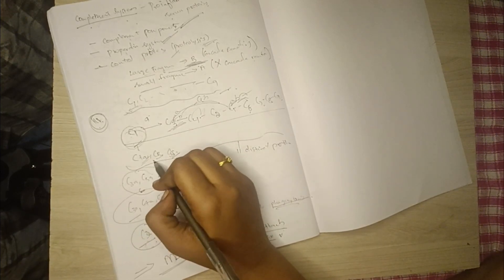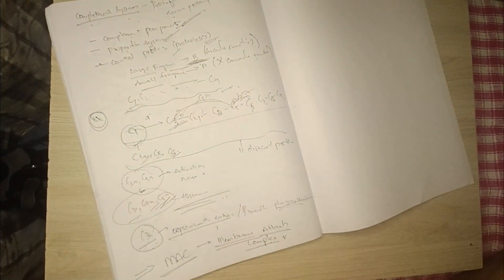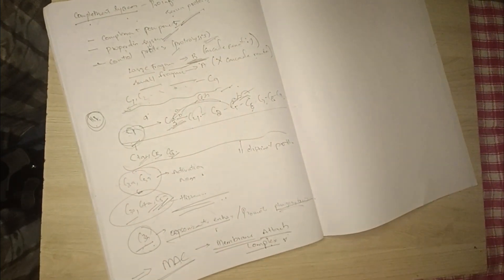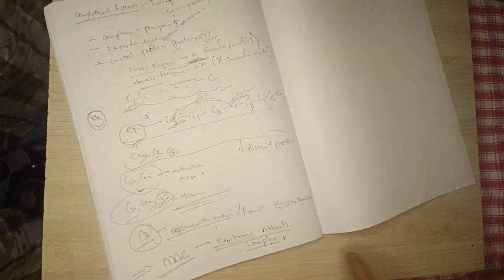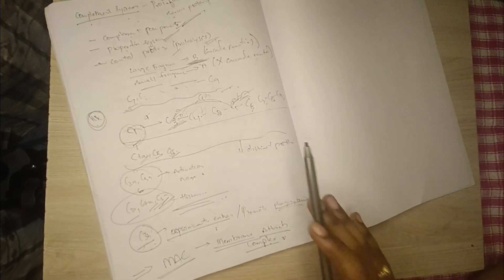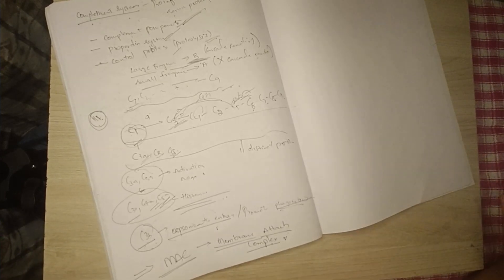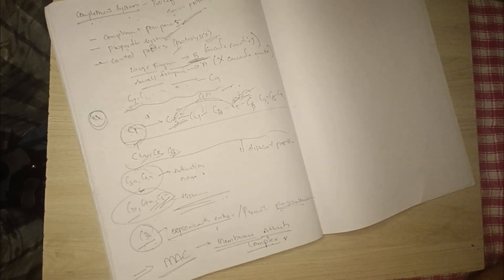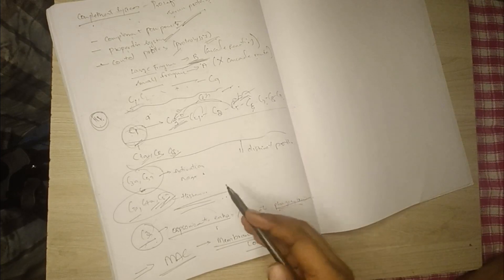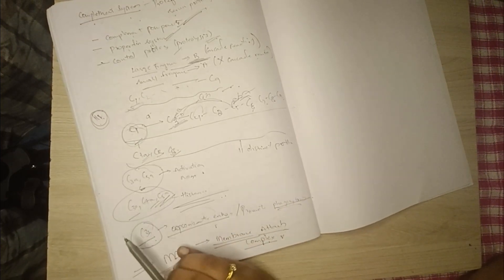C1 gets into a complex and each one helps the other to form up to C9. All these proteins help in the vascular and cellular events of inflammation. As discussed previously, C3a and C5a help in the release and activation of mast cells.